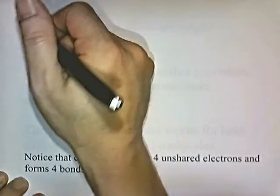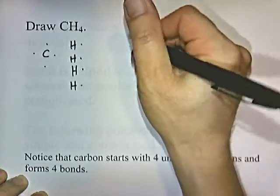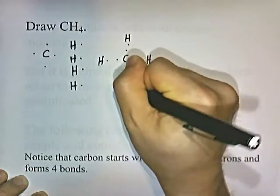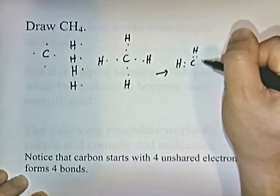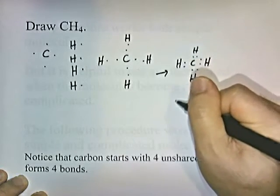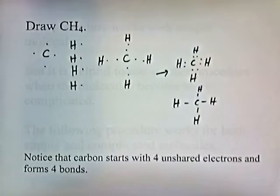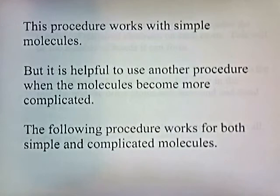Let's draw CH₄. Carbon is in group four on the periodic chart, so it has four valence electrons, and each hydrogen has one valence electron. Arranging this to pair up all the unpaired electrons, we end up with that structure. Notice that carbon starts with four unpaired electrons and forms four bonds. The number of bonds each atom can form depends on how many unpaired electrons it has.